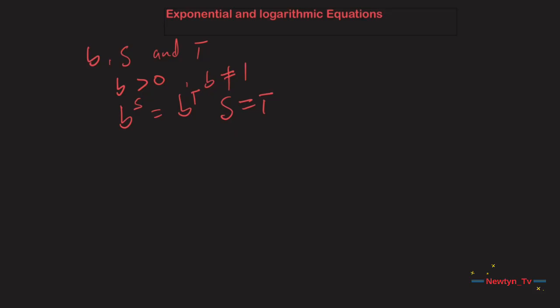Let's consider this example: 3 exponent (4x minus 7) equal to 3 exponent 2x divided by 3. To solve for x, we use the division property of exponents to rewrite the right side so that both sides have the common base of 3. Then we apply the one-to-one property of exponents by setting the exponents equal and solving for x.